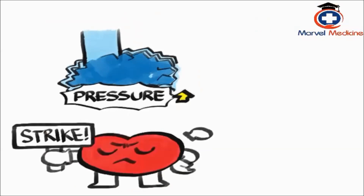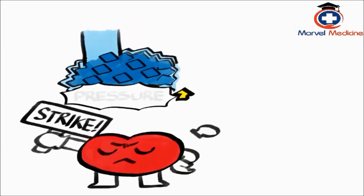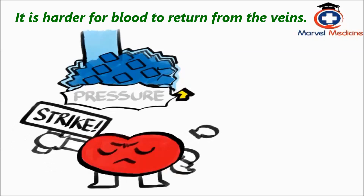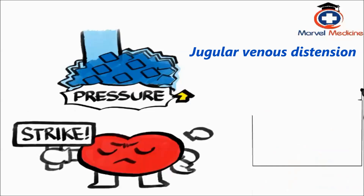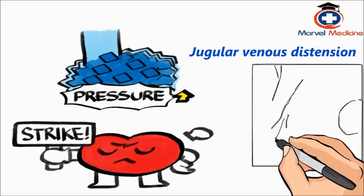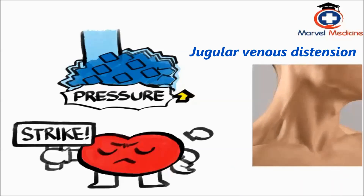If the pressure in the right atrium increases, do you think it would be easier or harder for blood to return from the veins? Harder, right? So blood backs up in the veins that empty into the right atrium. This is why you have signs like jugular venous distension in right heart failure.